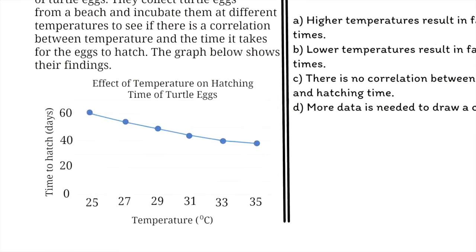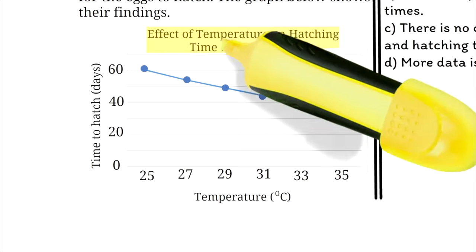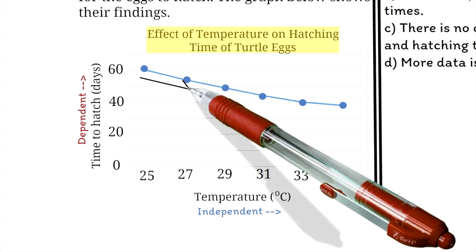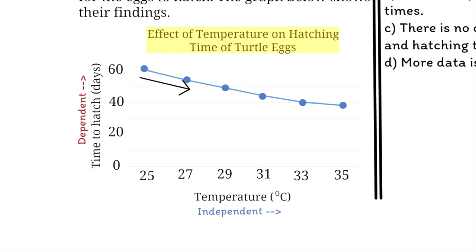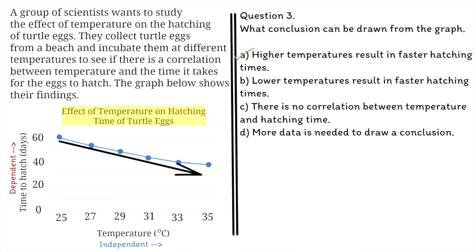Before we answer this question, let's have a quick lesson on graphs. The title of the graph tells us what the graph is about. The x-axis, which is the horizontal axis, is usually the independent variable — so in question 2, we could have used the graph to answer it. The y-axis, which is the vertical axis, is usually the dependent variable. Graphs of this form are read from left to right, and the slope of the line determines if the line is increasing or decreasing. For this graph, we can say there is a decrease in the time to hatch when the temperature increased from 25 to 27 degrees Celsius, and time to hatch continues to decrease as you increase the temperature. This means our answer is A: Higher temperatures result in faster hatching times.